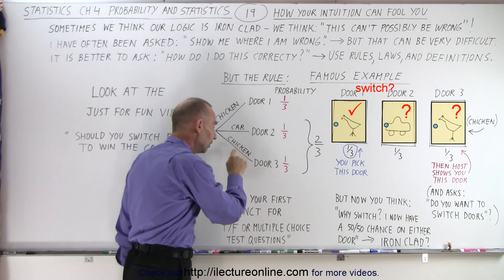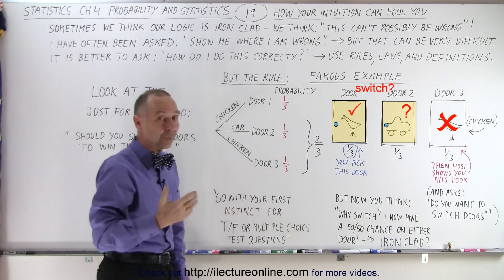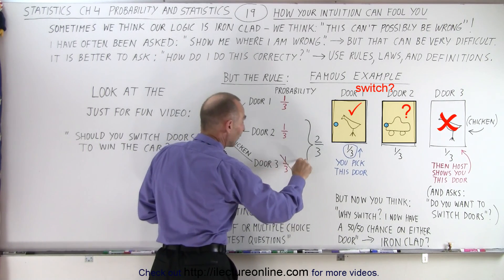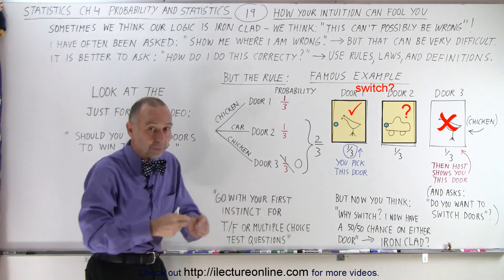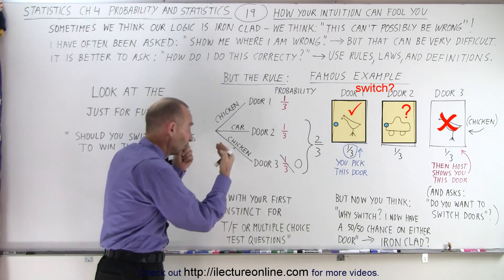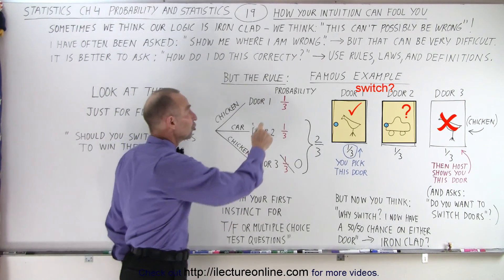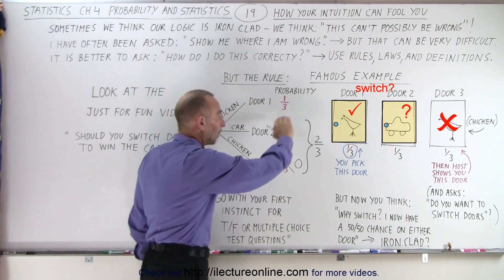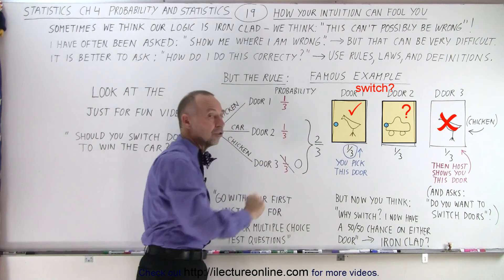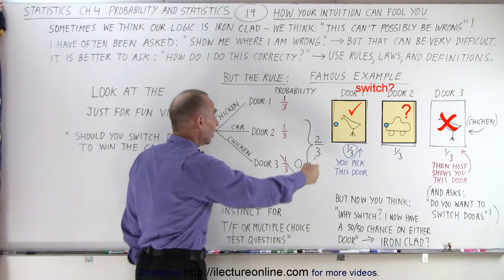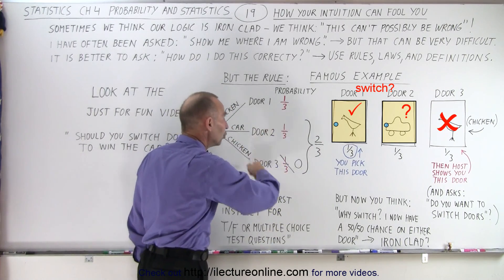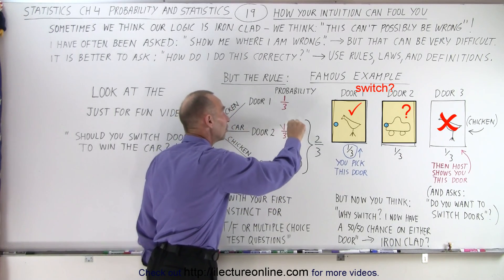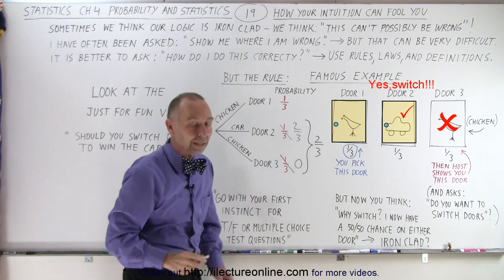But if I now show you this door, now you realize wow we no longer have a one third chance. Now we have a zero chance that the prize will be behind that door because we opened the door and we saw that the prize wasn't there. Does that now change the probability of this door? The answer is no it doesn't. But the probability of the two doors combined here also doesn't change. There's still a two-thirds chance that the prize will be behind these two doors. But since this one went down to zero chance, then this increases to two-thirds probability.